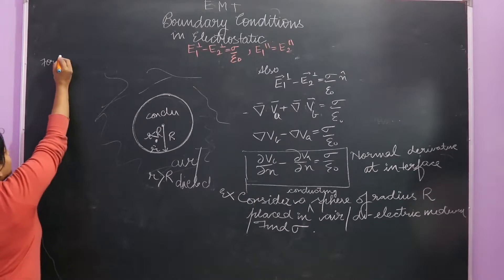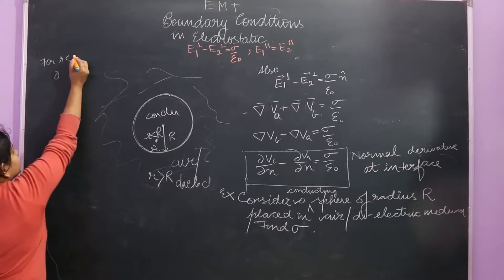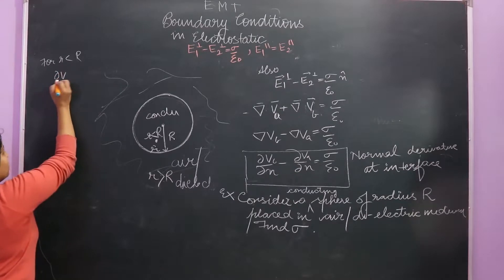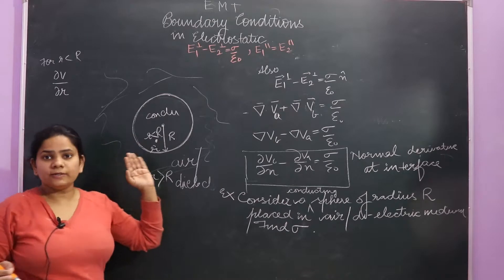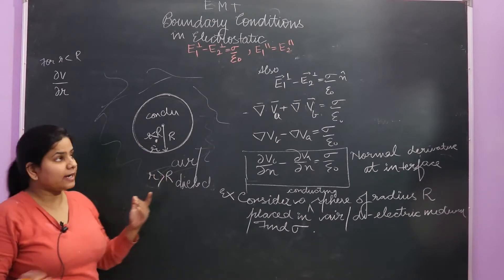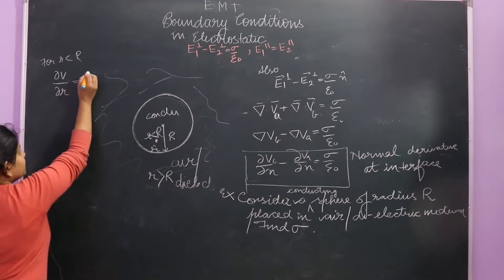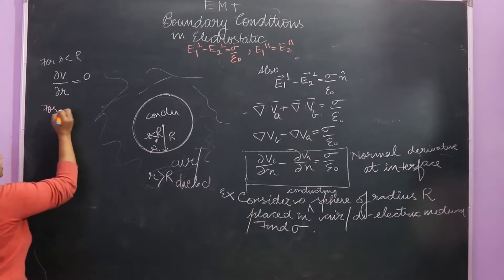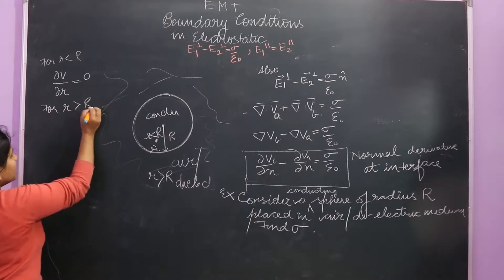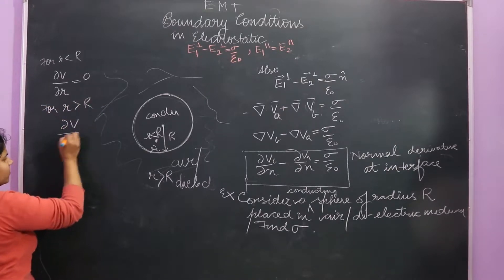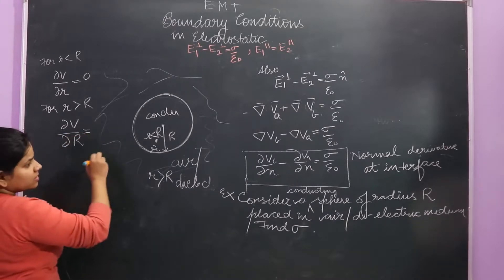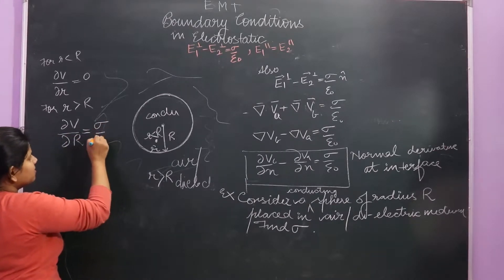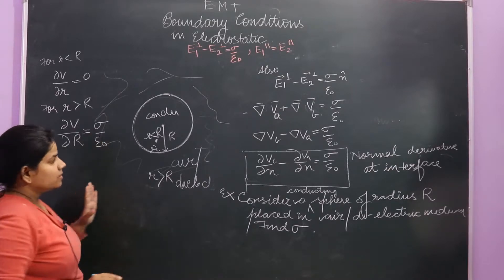For r less than capital R — that is inside the conductor — del V upon del r will be zero, because the conductor's potential is constant. For r greater than R, del V upon del r gives some value. So we use: del V_B/del r minus del V_A/del r equals σ upon ε₀.